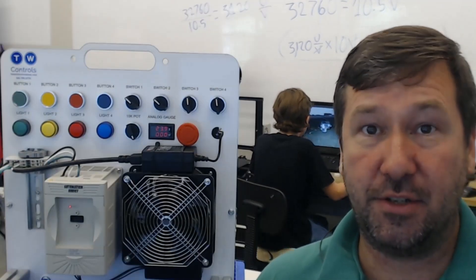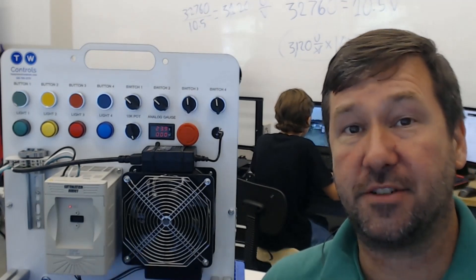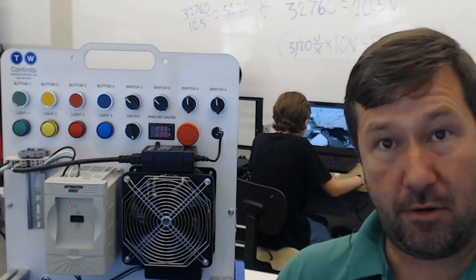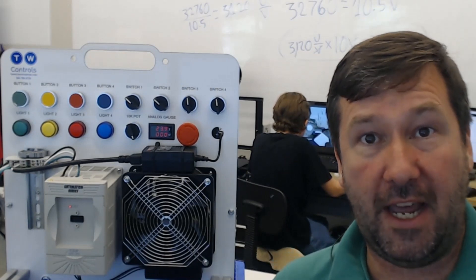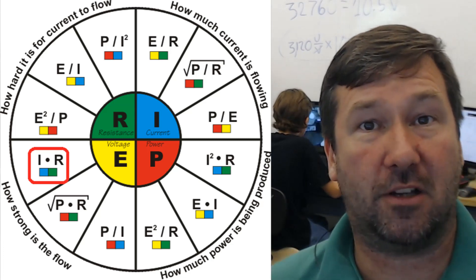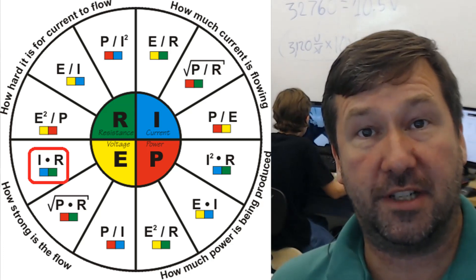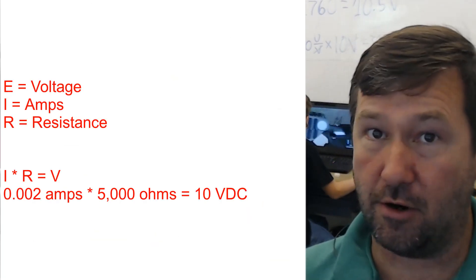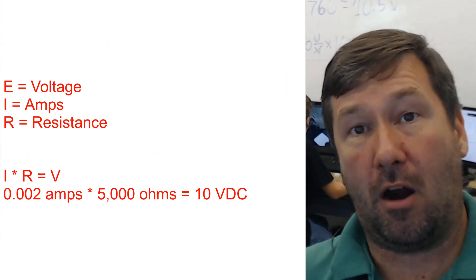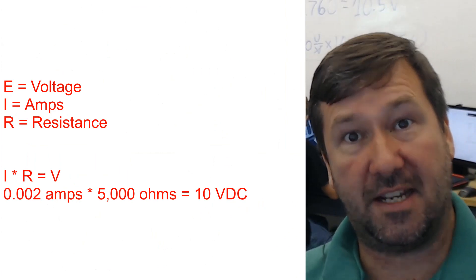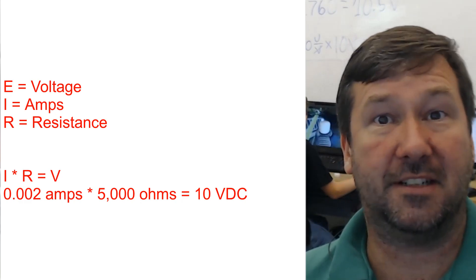That two thousandths of an amp of current is going to be in each one of those devices. So now that we know current and we know our potentiometer is 5k, we can figure out that voltage. So plugging back into our ohms law pie chart, voltage is going to be equal to current times resistance. So our current is two thousandths of an amp. Our resistance is 5,000 ohms. Two thousandths times 5,000 equals 10.